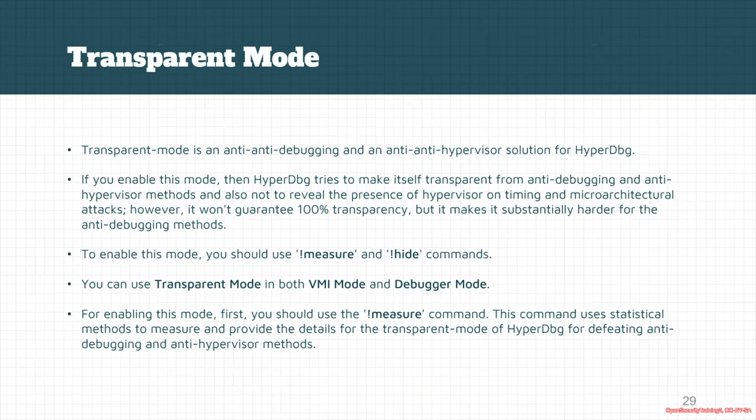If you simply want to bypass some of the delta timing attacks, you can use the !measure command. It uses some statistical methods to measure and provide details of transparent mode for HyperDBG to defeat these anti-hypervisor methods.